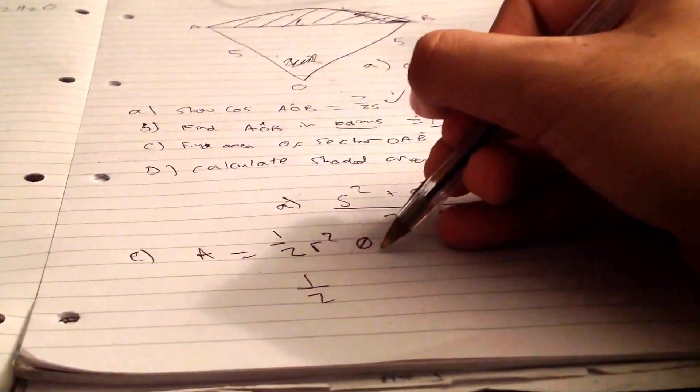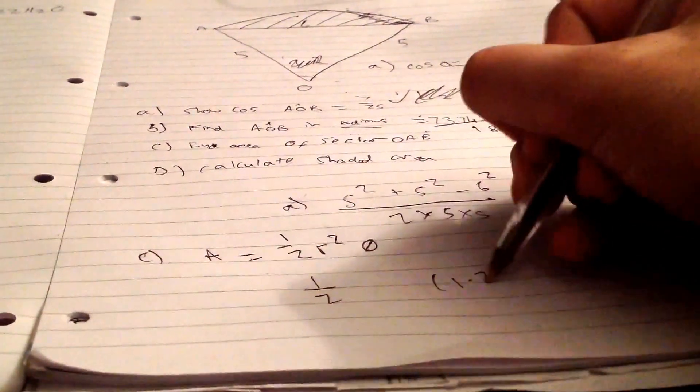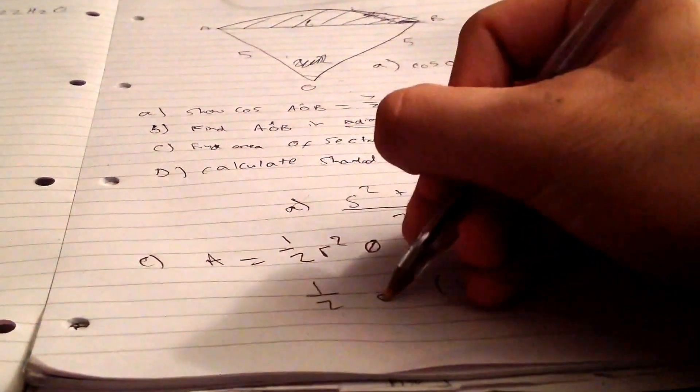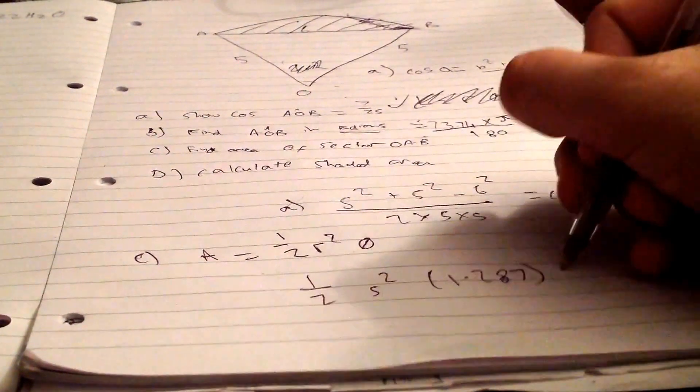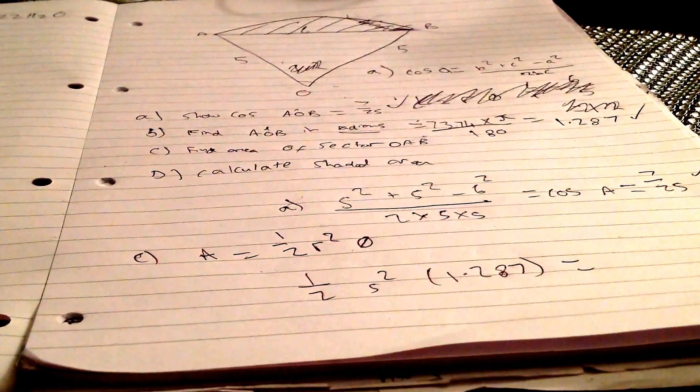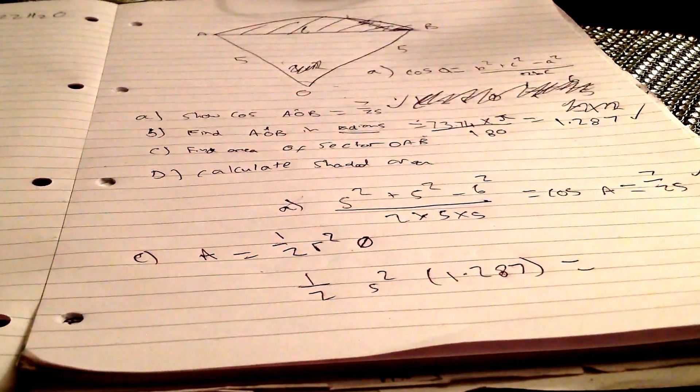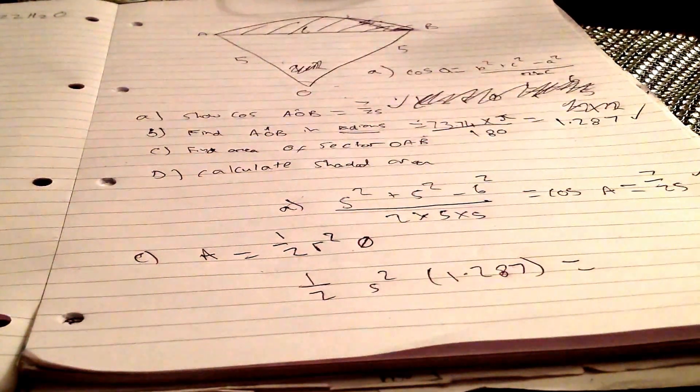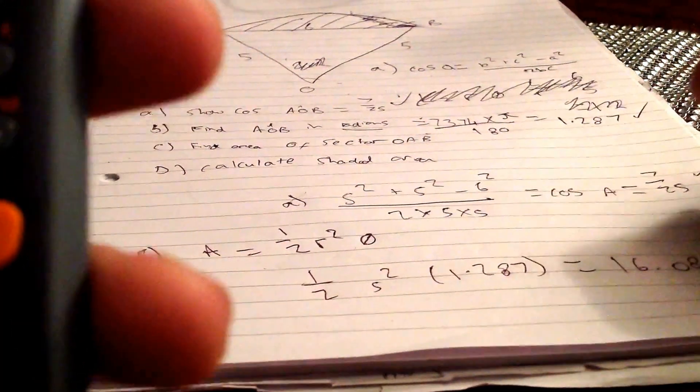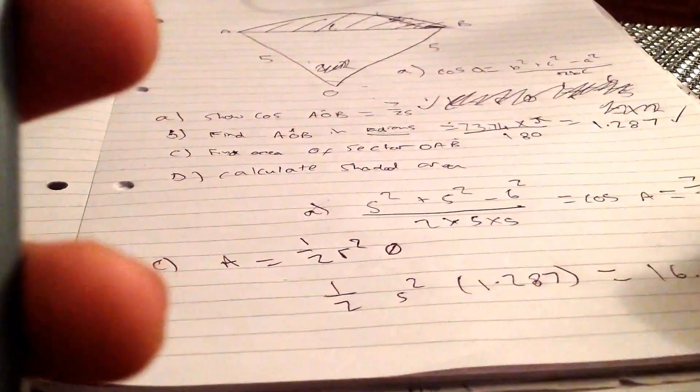Now we need to sub in what we've got. Half—theta is in radians, always remember—that's going to be 1.287, and R squared is 5 squared. Therefore, the answer is 0.5 times 25 times 1.287, and you get 16.0875, which equals 16.1.